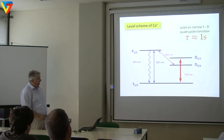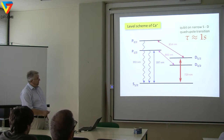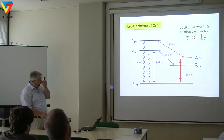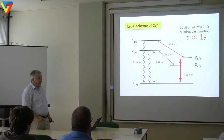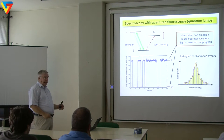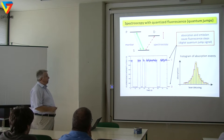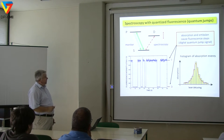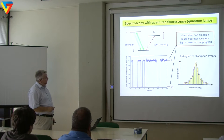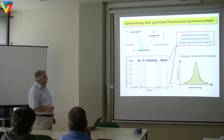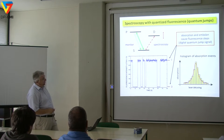Here comes the trick with which we can detect these things with 100% detection efficiency. For a single ion we have a three-level system with this forbidden transition. If we scatter photons here, we see fluorescence. But once the excited state gets occupied, the electron is no longer available to scatter light — the light switches off. These are the famous observations of quantum jumps from the mid-1980s. You can use the quantum jumps observed as a function of frequency for precision spectroscopy — that's how modern ion clocks work.